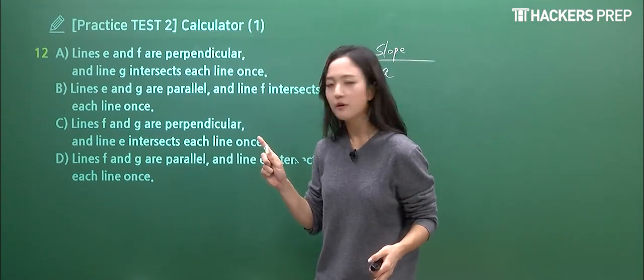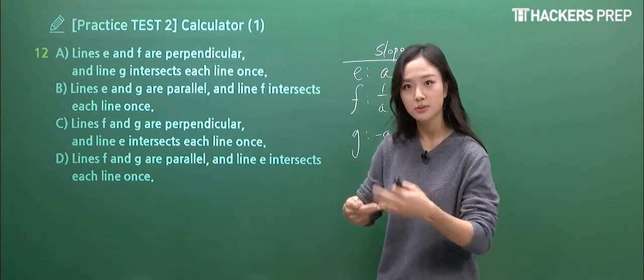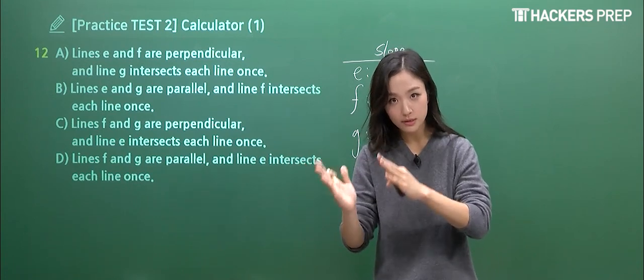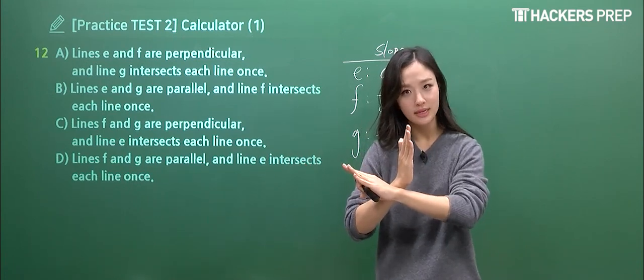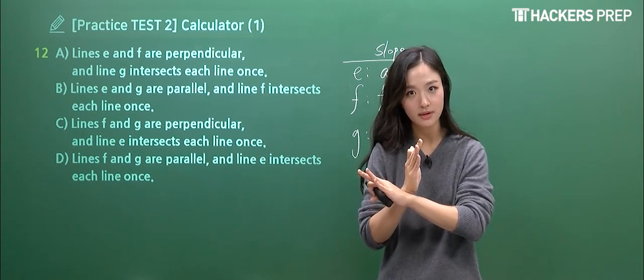If you think carefully, when we went over the no calculator section in test one, I mentioned this briefly. Two parallel lines are going to have same slope value, and perpendicular lines are going to have what slope value? When you multiply, the product has to be a value of negative 1.